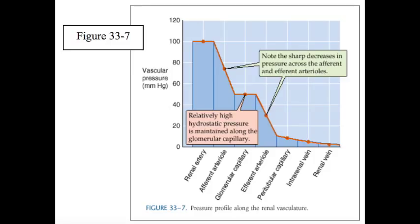From these idealized glomerular capillary hydrostatic pressure responses, one might predict that an increase in afferent arteriolar resistance would decrease the glomerular filtration rate, and that an increase in efferent arteriolar resistance should have the opposite effect.